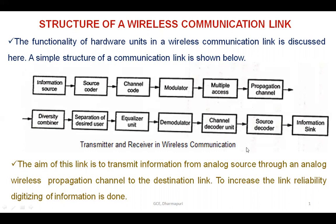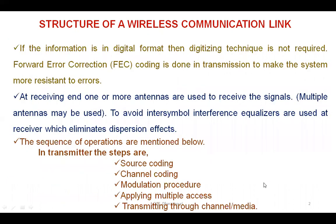To increase the link reliability, if the information is in digital format, then a digitizing technique is not required. Forward error correction (FEC) coding is done in transmission to make the system more resistant. At the receiving end, one or more antennas are used to receive the signal. Sometimes multiple antennas may be used to avoid intersymbol interference. Equalizers are used at the receiver side which eliminate the dispersion effect.